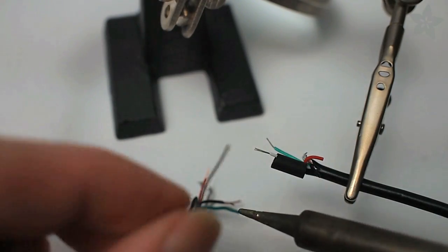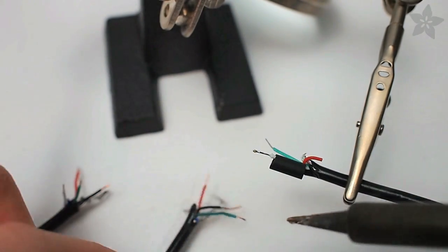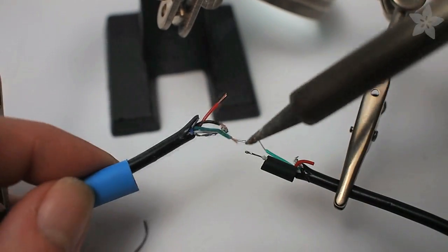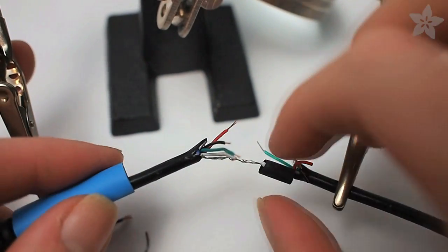Prepare the other connectors in a similar way, except they'll each only connect to two of the four wires. This is the USB-A connector that's going to go to the trackpad and keyboard, so we're only going to connect the white and green wires. And don't forget to add that heat shrink tubing before you solder them together.